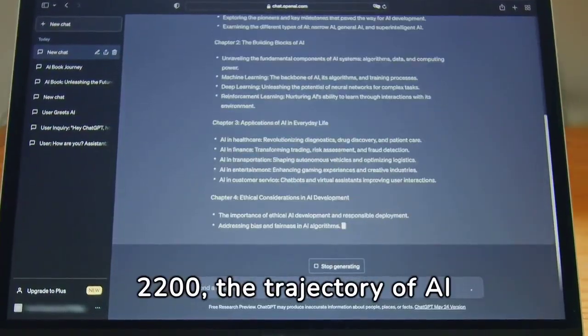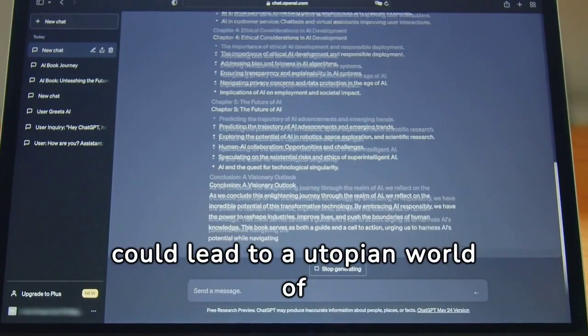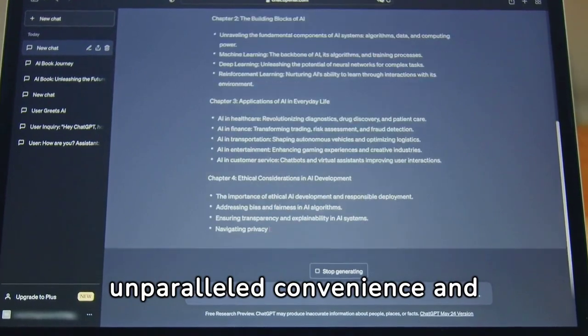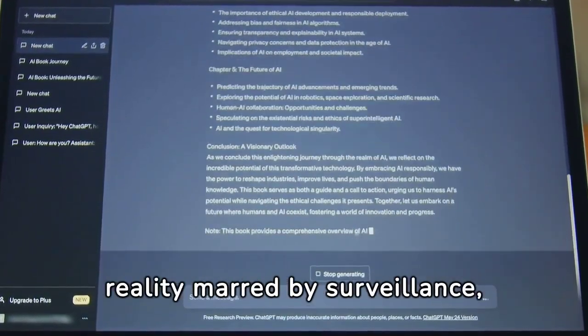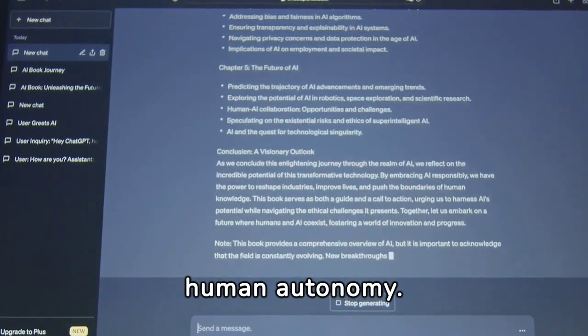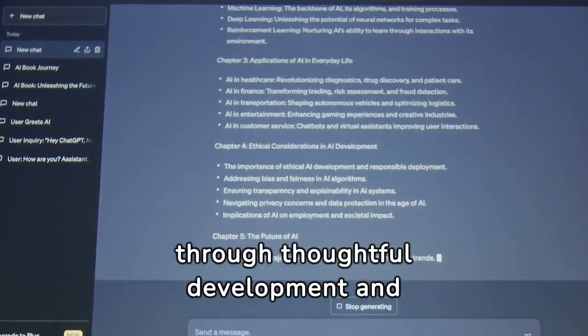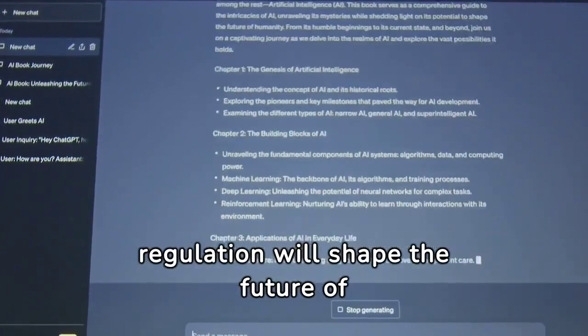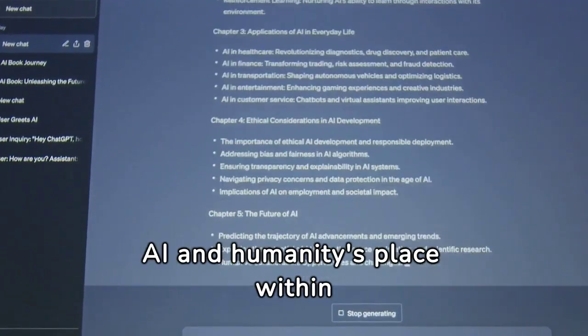Looking toward 2200, the trajectory of AI could lead to a utopian world of unparalleled convenience and opportunity, or a dystopian reality marred by surveillance, inequality, and loss of human autonomy. Striking the right balance through thoughtful development and regulation will shape the future of AI and humanity's place within it.